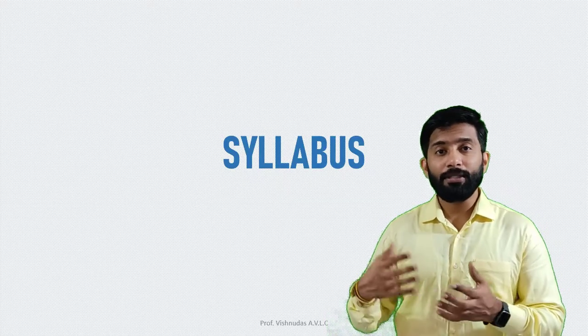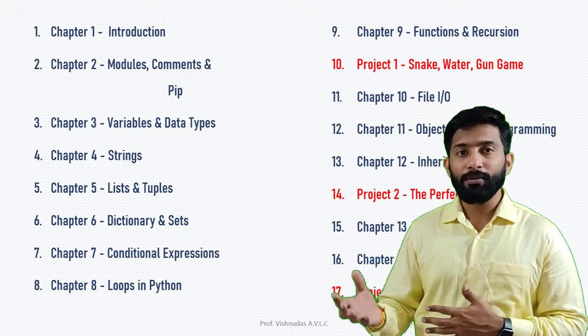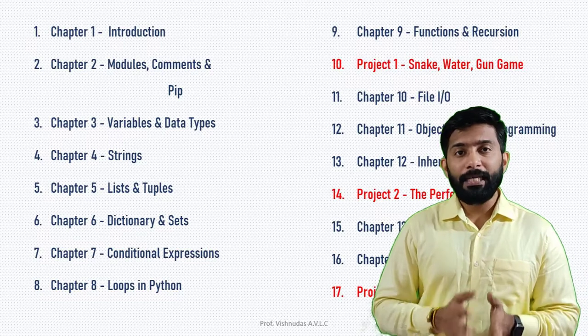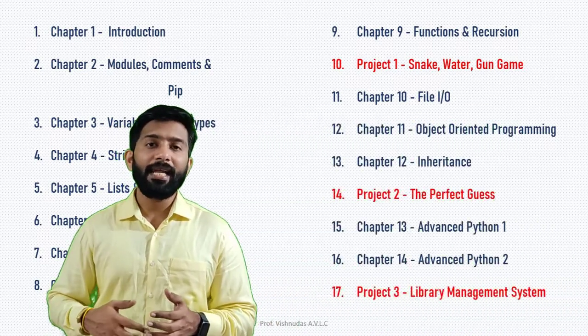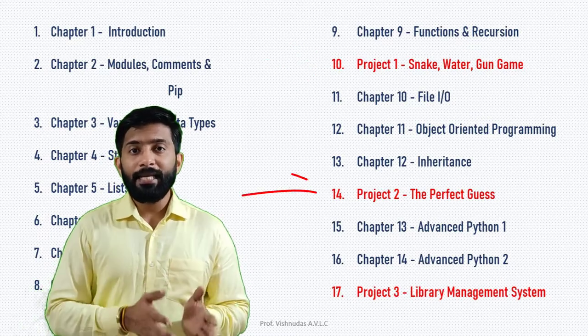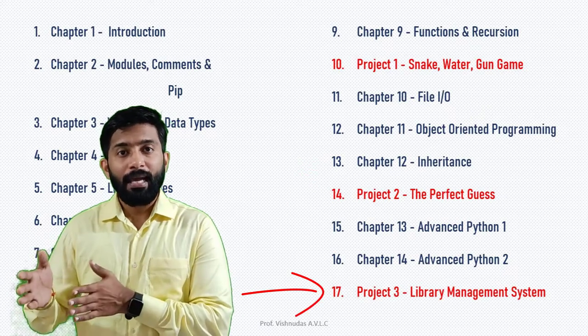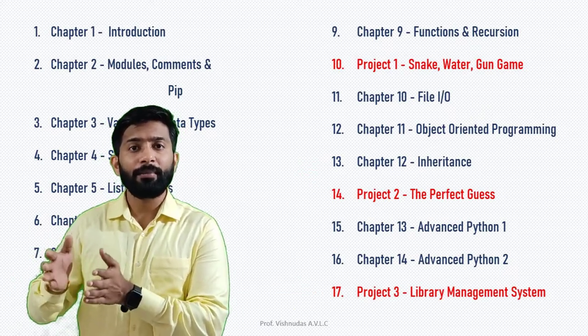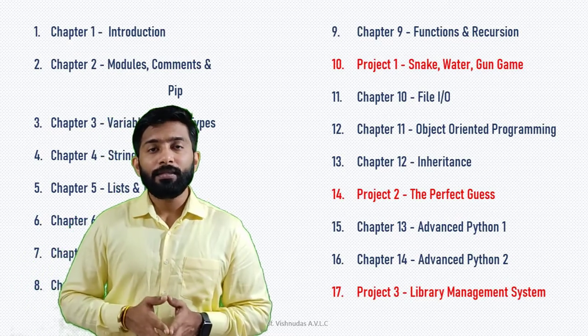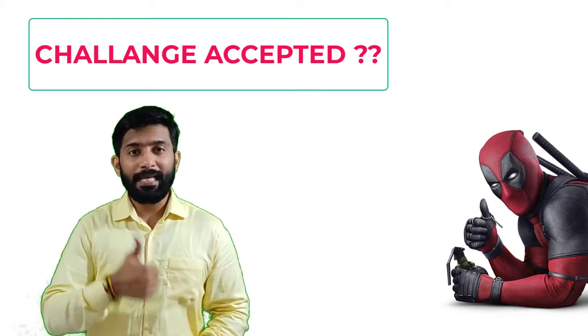Moving ahead with the syllabus: there are a total of 17 videos, of which 14 are chapters and 3 are projects highlighted in red. In the first project, we develop a game application; the second is a perfect guess; and the last is a library management system. These are developed using advanced Python programming. If you have accepted the challenge to learn Python, make a comment saying, 'Yes, I have accepted the challenge to learn Python programming.'